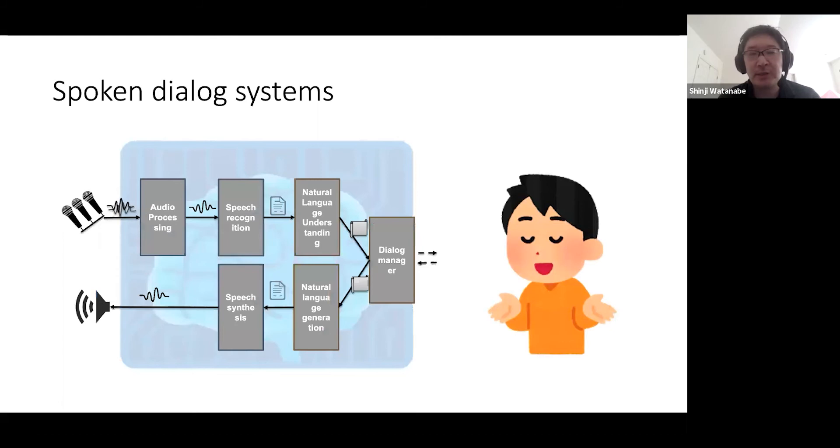To realize this conversational AI, we have to build spoken dialogue systems. This requires a lot of speech and audio processing, including the block diagram here: audio processing, speech recognition, natural language understanding, dialogue manager, natural language generation, and speech synthesis.